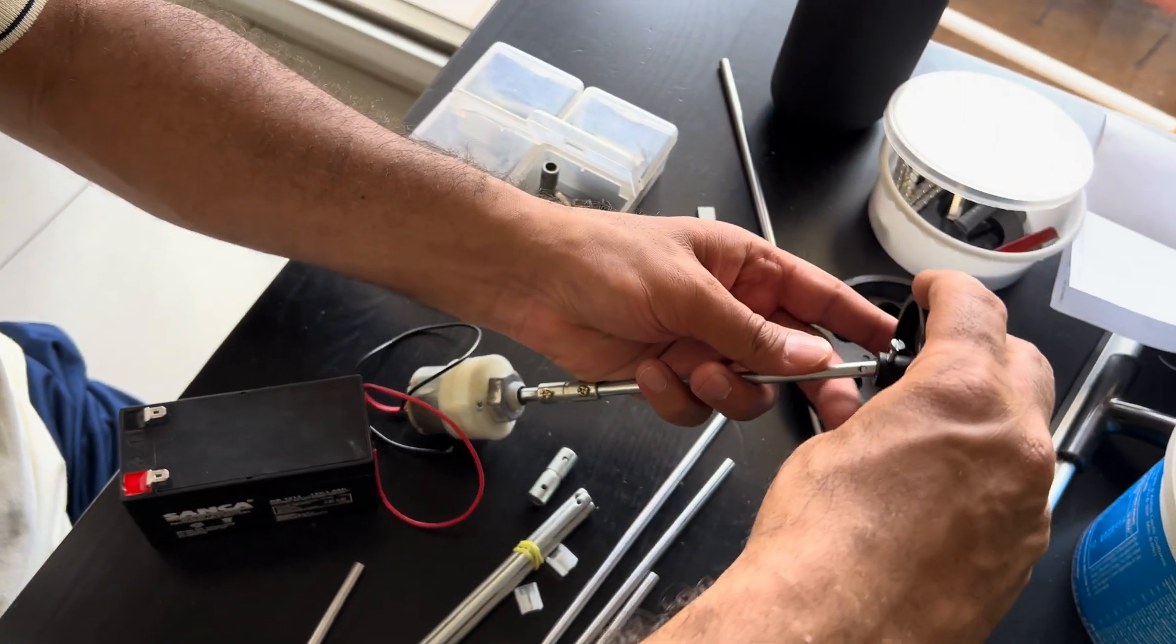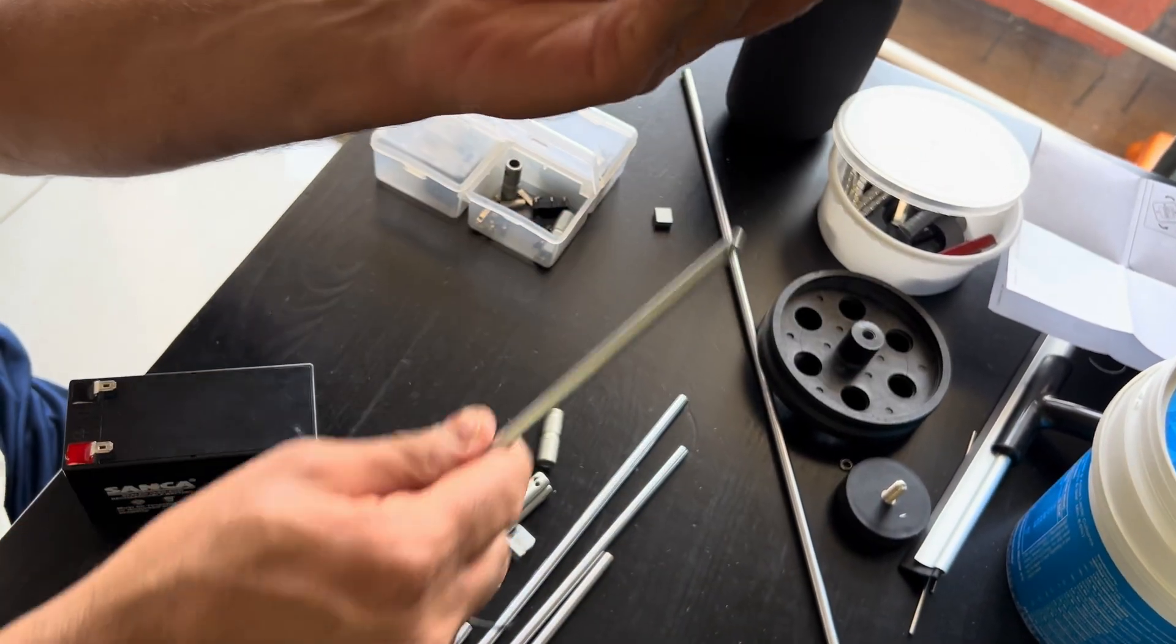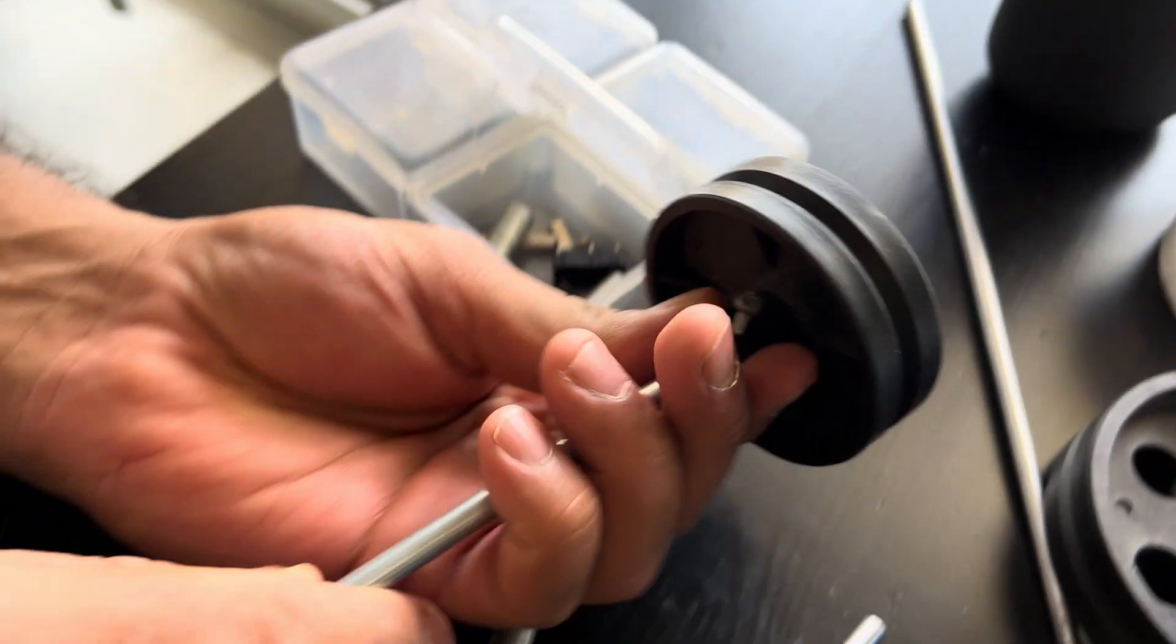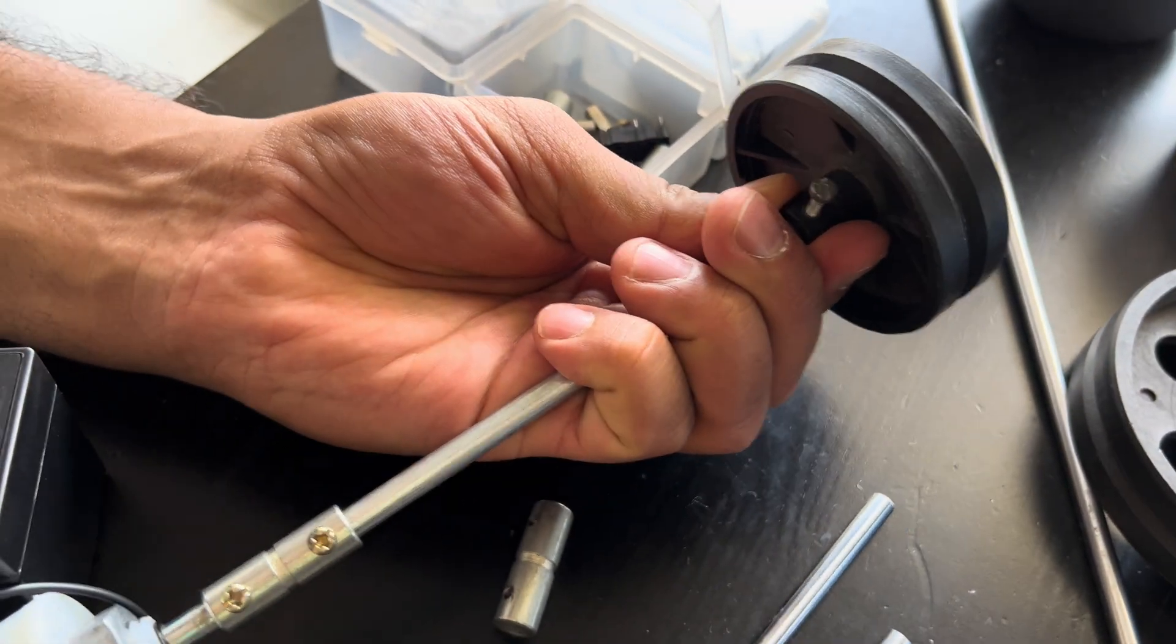Now, let me put a pulley here. So this is a pulley wheel. There is a dip in here. I will insert it.